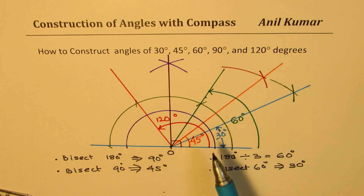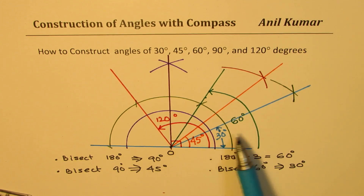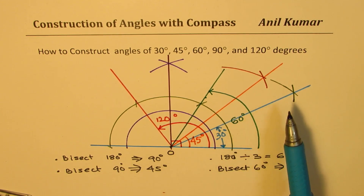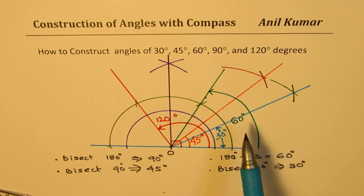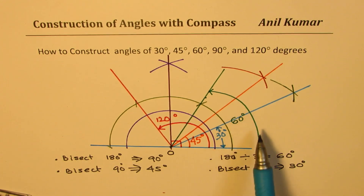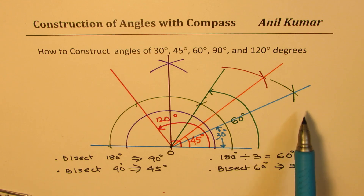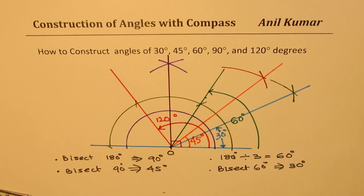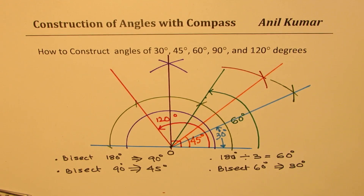We get 30 degrees. You can keep bisecting further — bisect 30 to get 15 degrees. The method is: cut an arc and place your compass at both points with the same arc size to find the bisector of the angle. That's how you get most angles using just a compass and a ruler.